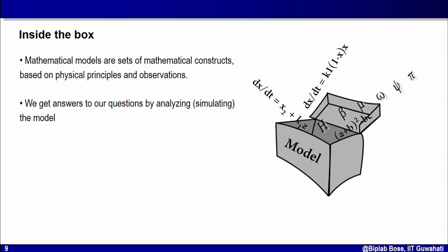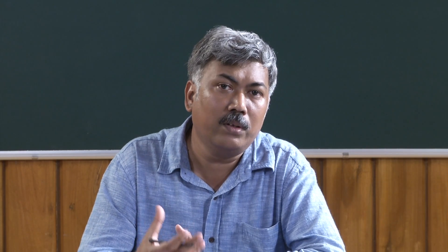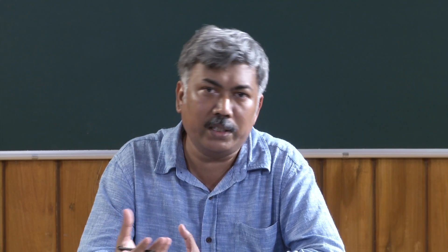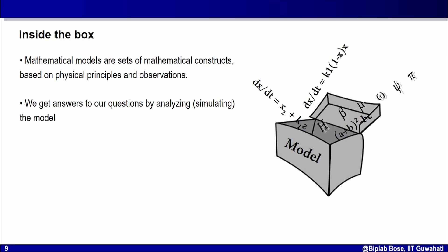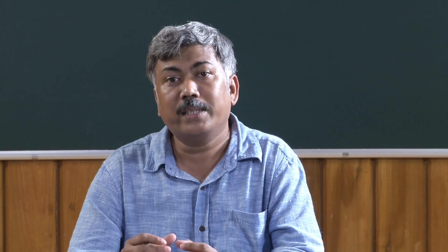Now the next question: what is a mathematical model? Mathematical models are nothing but a set of mathematical constructs — for example, a set of ordinary differential equations which will form our model. These equations and relations are based on certain physical principles we believe are at play behind the phenomenon I am studying, and based on observations coming from experiments. Based on your observation and the physical laws of nature, you build certain mathematical equations and relationships — that is your mathematical model. Suppose you want to model the dynamics of p53 in a cell.